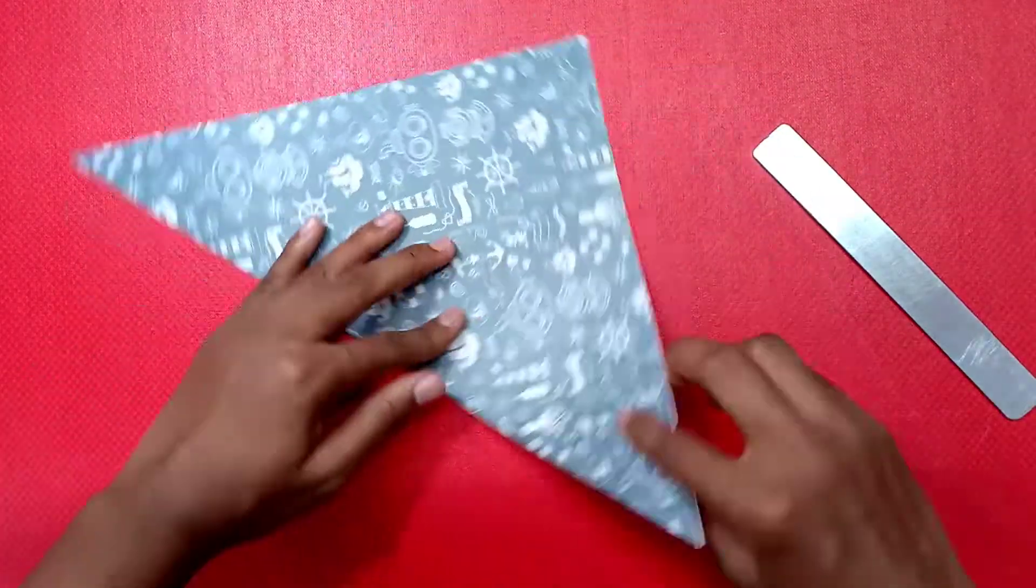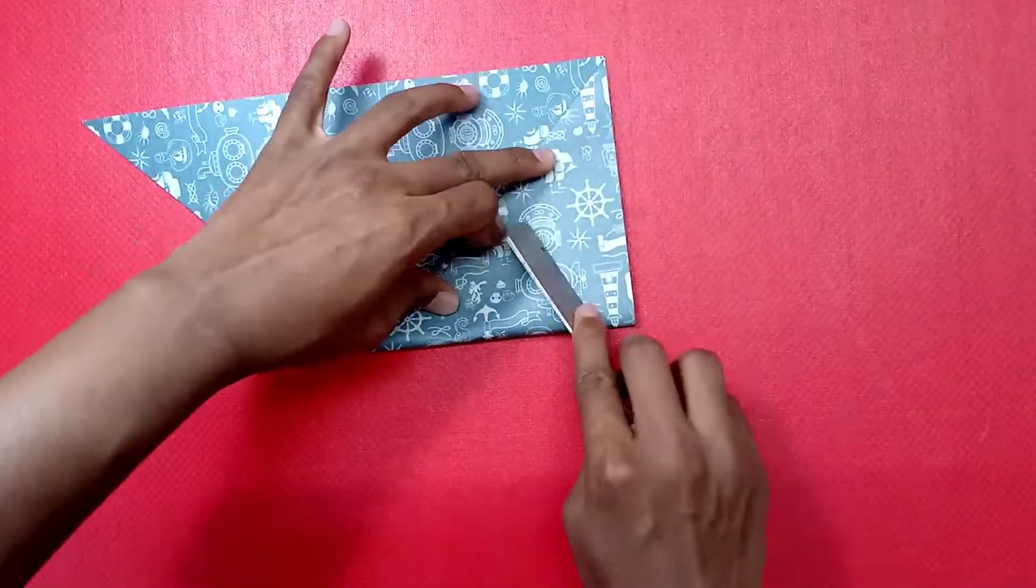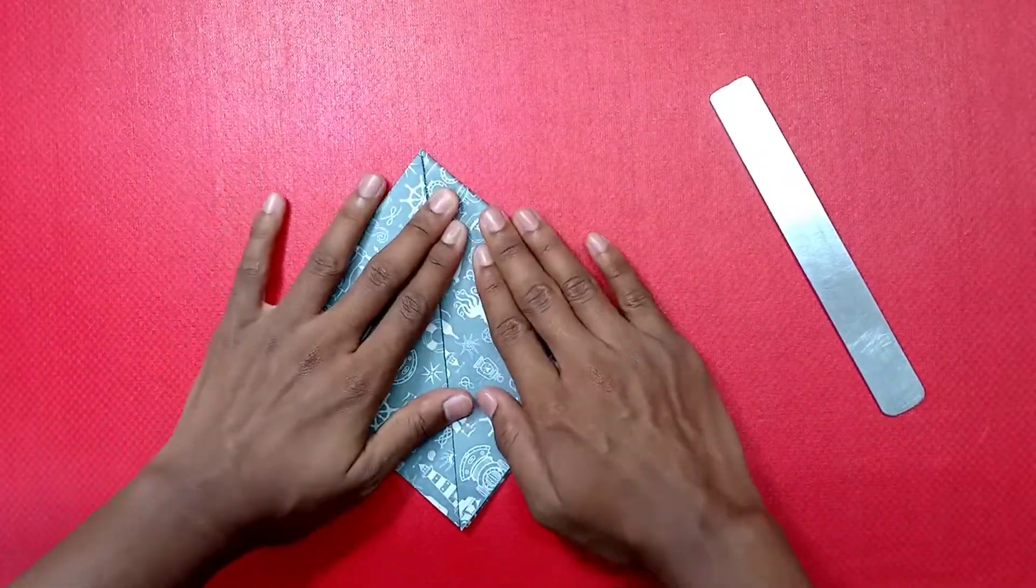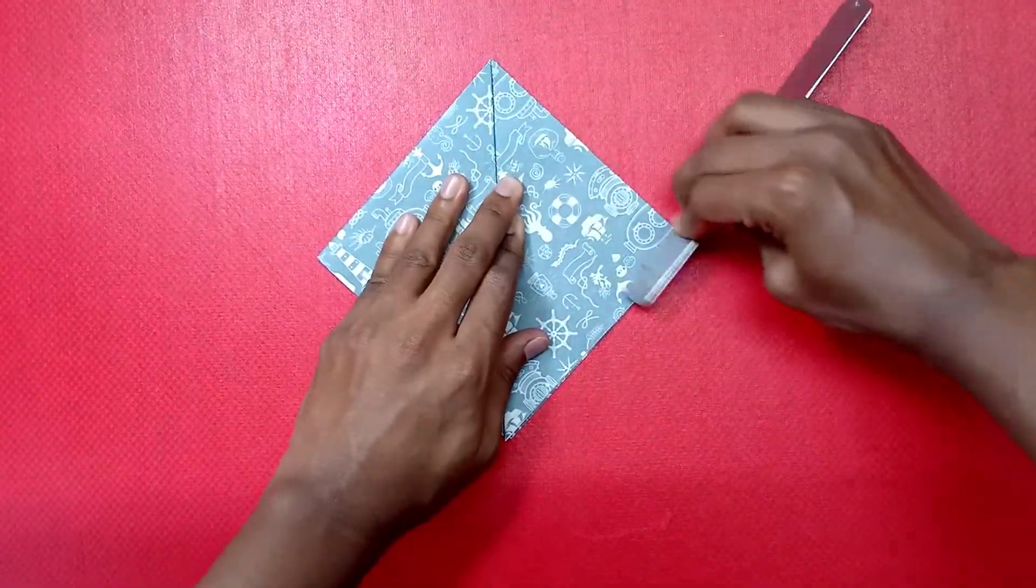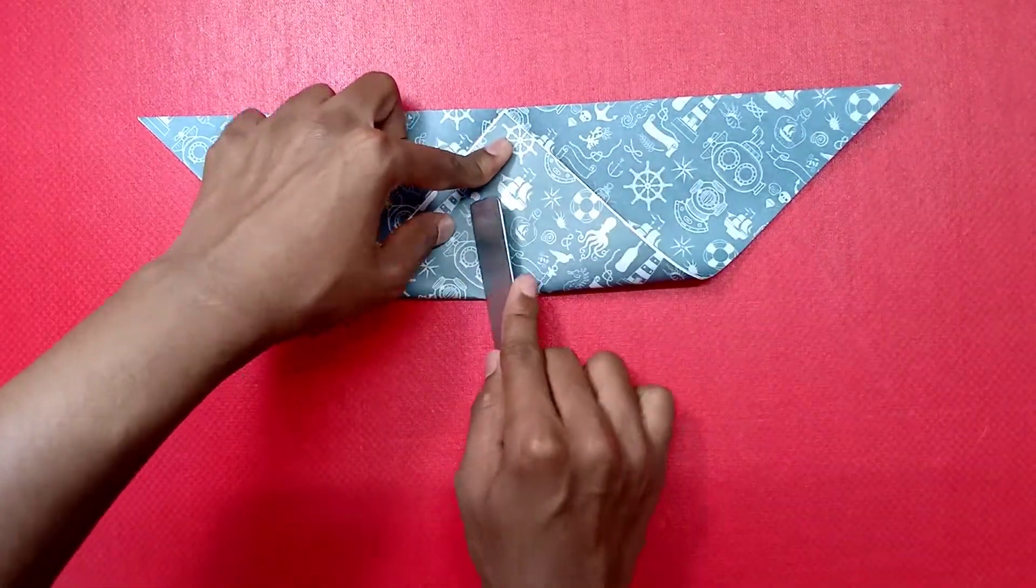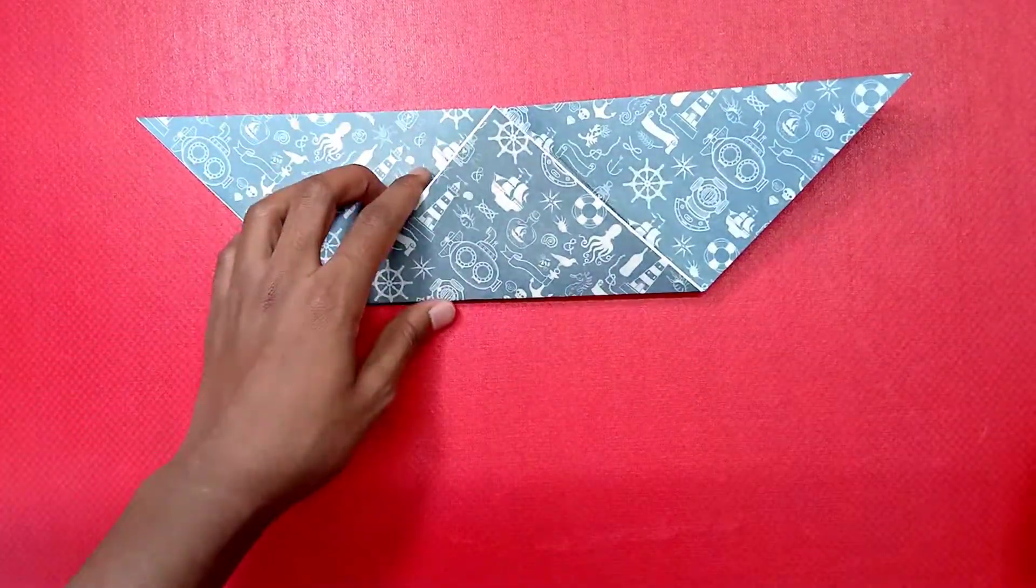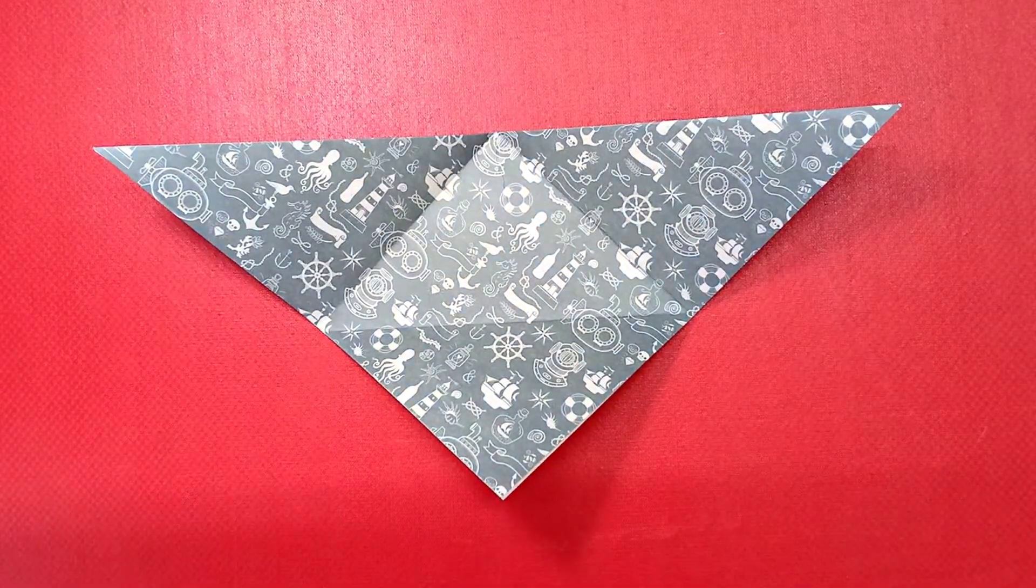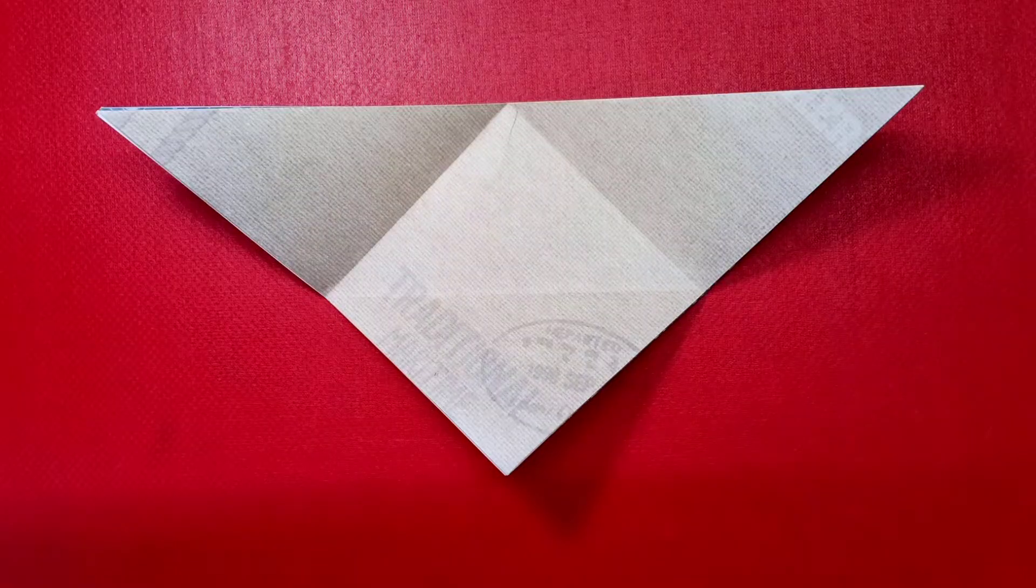Then take one end of the triangle and match it to the top of the triangle and fold it down. Do the same for the other side. Open them, then take the top one and match it with the line and fold it down. With that you are done. You will need two more like this one.